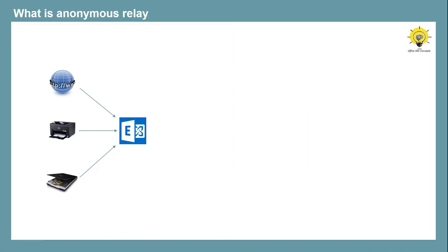Now let's talk about Anonymous Relay or SMTP Relay in Exchange Server. Anonymous Relay allows you to send emails from a website, an application, or a device like a printer or scanner. Let's assume you have a printer application in your on-premise Exchange organization and you want to relay emails to internal users or to the internet. We do not want to let anyone else send emails using our Exchange Server, so we will allow only this printer application to connect and send emails.